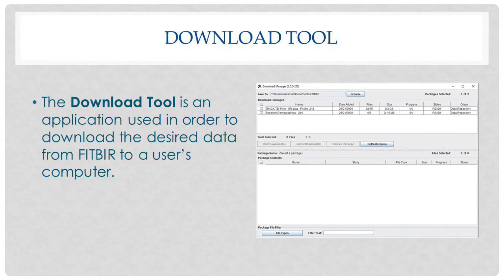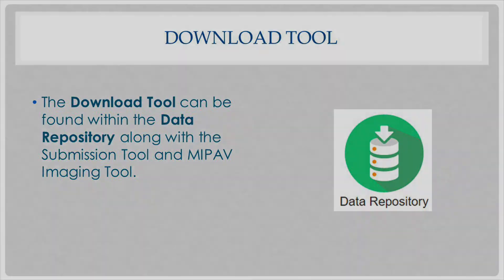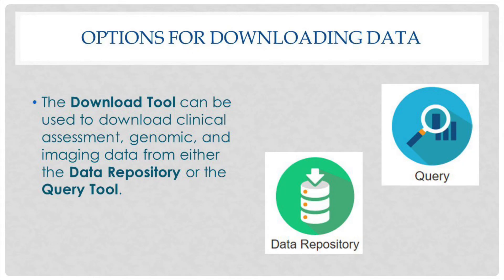The download tool is an application used to download desired data from Fitber to a user's computer. The download tool can be found within the data repository, along with other tools such as the submission tool and the MIP app imaging tool. Users have the ability to download clinical assessment data, genomic data, and imaging data from either the data repository or the query tool.